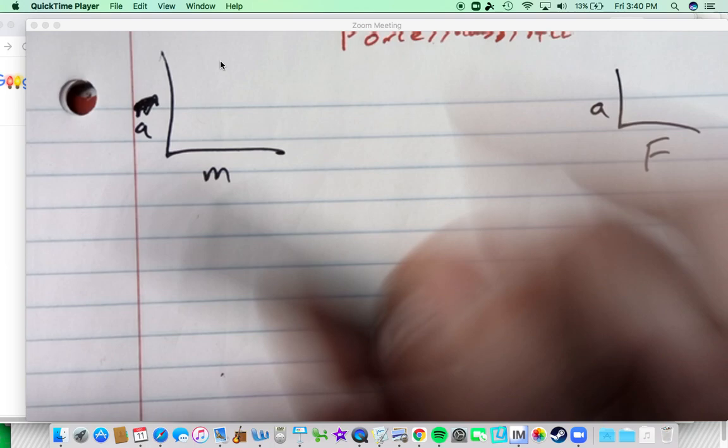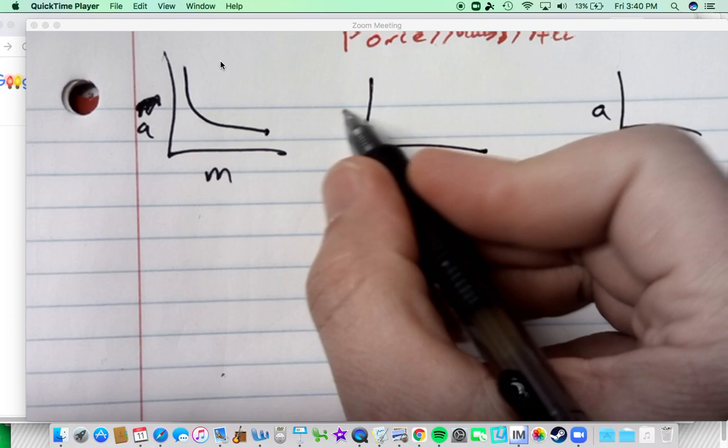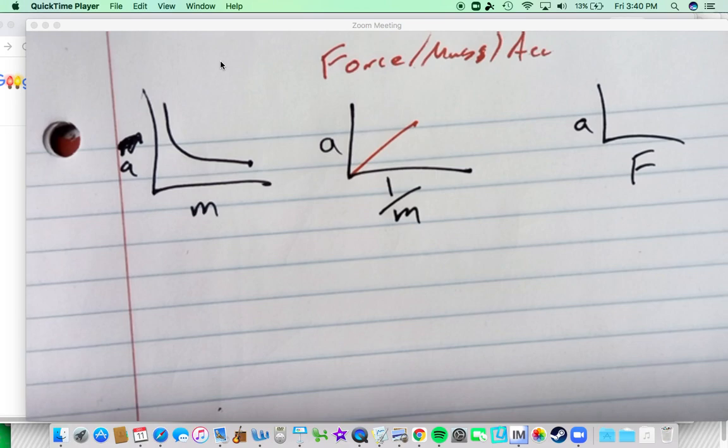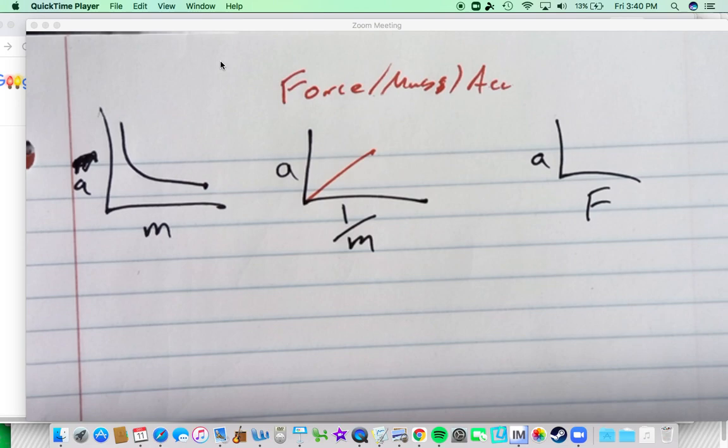So I'm going to take it one graph at a time. First you had the acceleration mass graph which looked like that. Most people linearized it, some was easier than others, and we got a pretty straight line with close to a zero intercept.